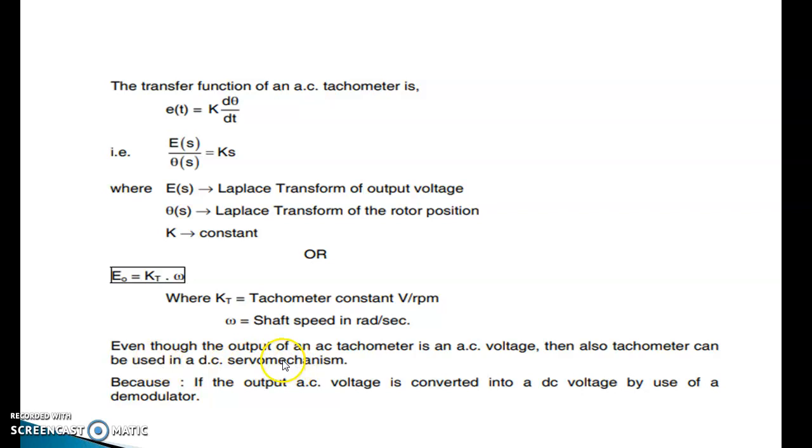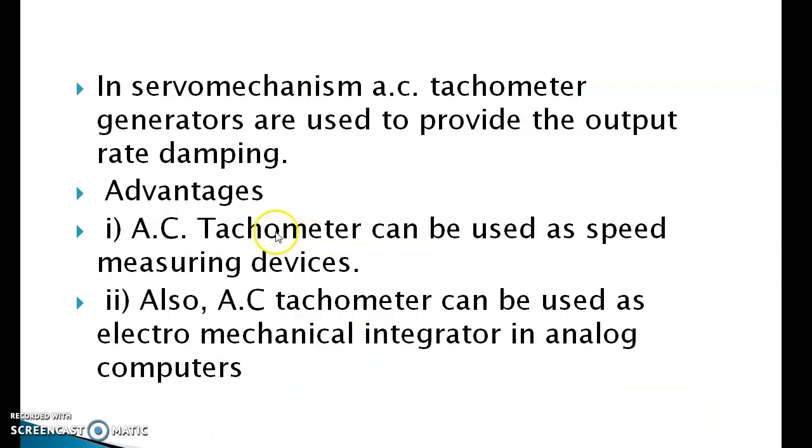Even though the output of an AC tachometer is an AC voltage, tachometer can be used in DC servomechanisms. Because if the output AC voltage is converted into DC voltage by use of a demodulator. In servomechanism, AC tachometer generators are used to provide the appropriate damping.